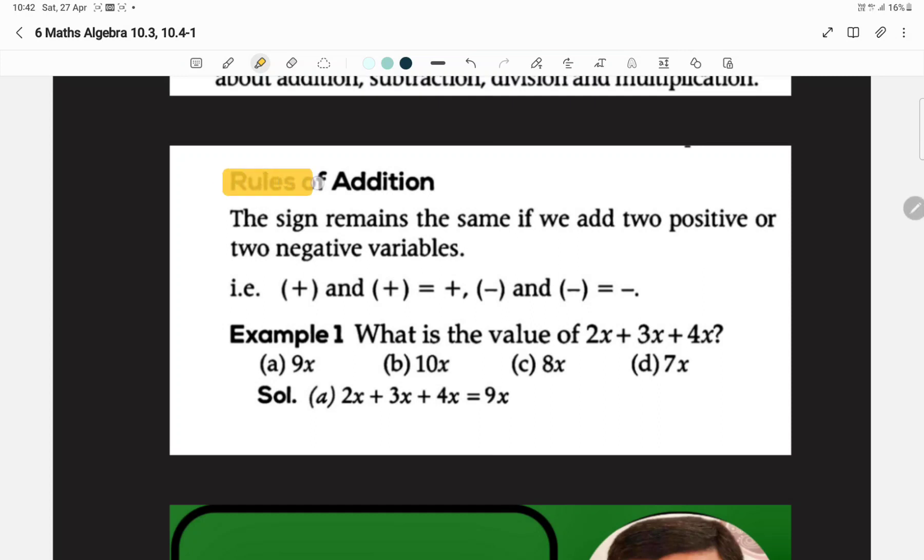See here, rules of addition. The sign remains the same if we add two positive or two negative variables. If we add two positive variables and two negative variables, the sign remains the same in the addition.